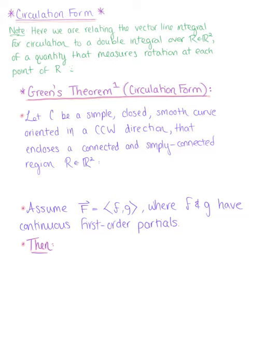Here is our theorem. We want to let C be a simple, closed, smooth curve oriented in a counterclockwise direction that encloses a connected and simply connected region R in R2. A simple curve has no intersections, a closed curve has the same initial and end points, and with the region being connected and simply connected, that means it's in one piece with no holes.